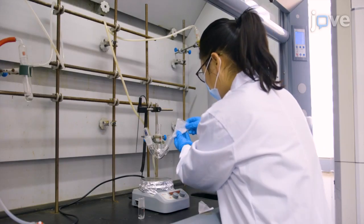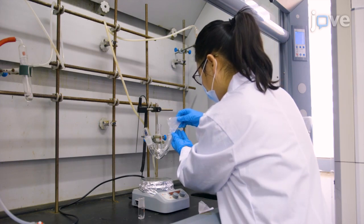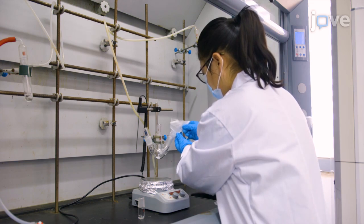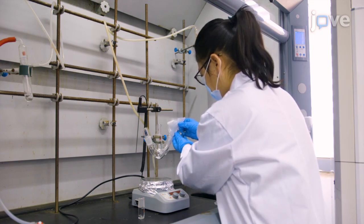For CT-PEG synthesis, first add 1.46 grams of succinic anhydride and 209 milligrams of 4-dimethylaminopyridine to a 100-milliliter round-bottom flask.